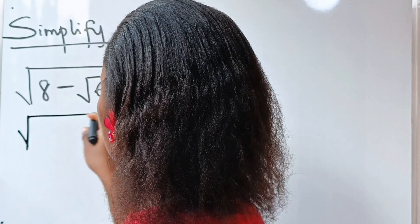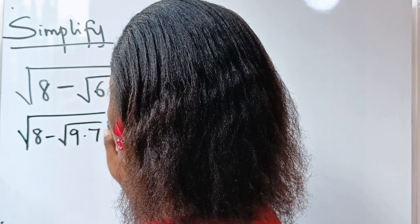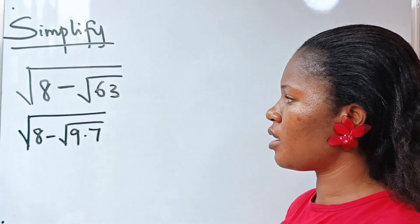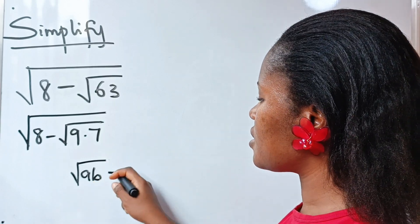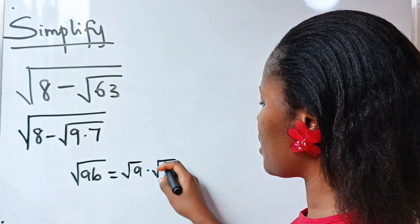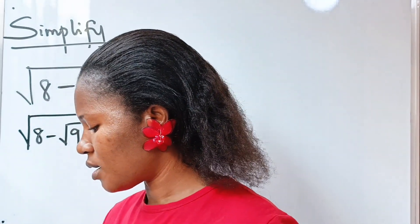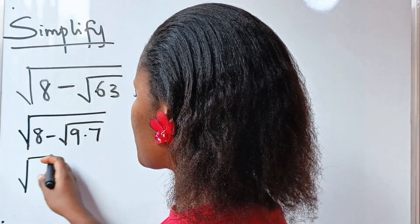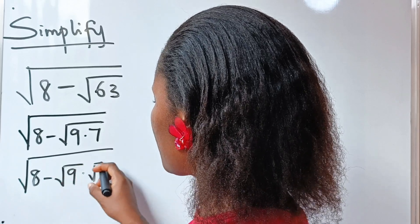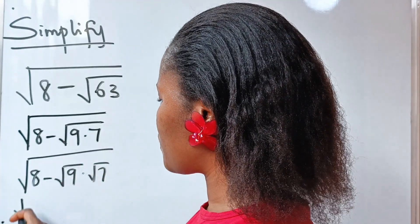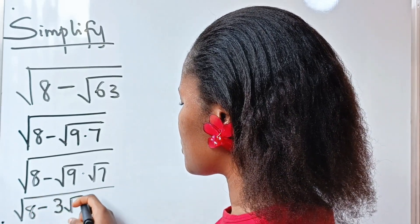So we have square root of 8 minus square root of 9 multiplied by 7. Notice that when you have square root of A multiplied by B, it is equal to square root of A multiplied by square root of B. So we can write this as square root of 8 minus square root of 9 multiplied by square root of 7. So we have square root of 8 minus 3 root 7.